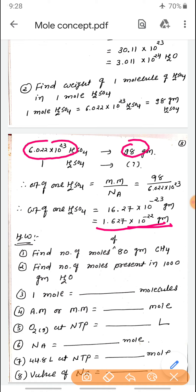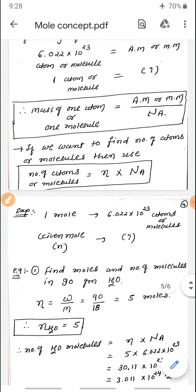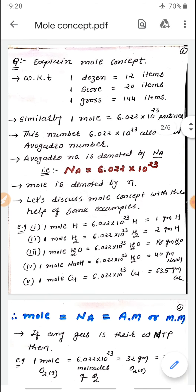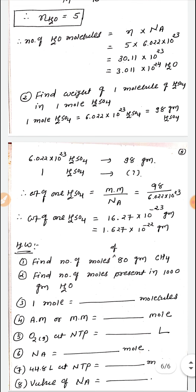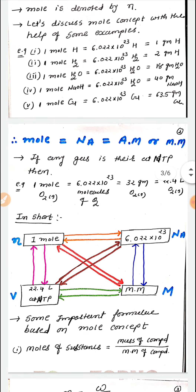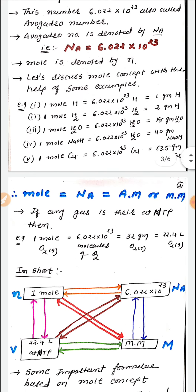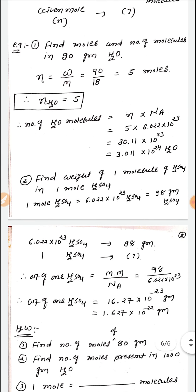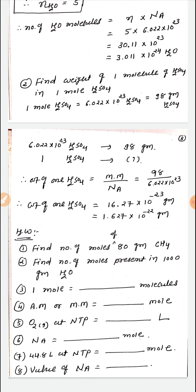Now the mole concept should be clear to you. I have given 8 basic practice questions. Watch this video once or twice and then solve them. Submit all 5 pages written out to me on my mobile number, and also write them in your fair notebook. In the next lecture we will discuss the electronic configuration of elements 1 to 30. The mole concept will be used extensively in Class 12 basic concepts of chemistry and analytical chemistry. Thank you very much, friends.